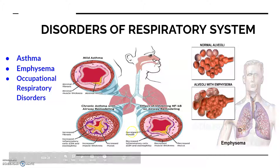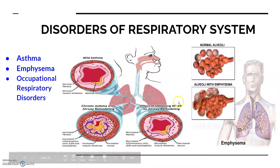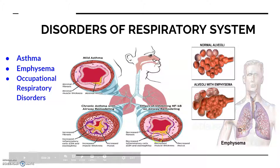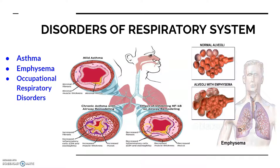With treatment, decreased fibrosis, decreased inflammatory cells, decreased mucus thickness, and decreased mucus secretion start happening. Here you can see the passage is totally blocked, and here the passage is slightly cleared but not completely. This is how asthma causes difficulty in breathing, wheezing, and inflammation of the bronchi and bronchioles.